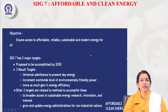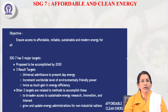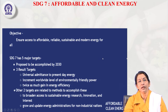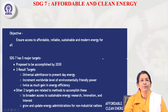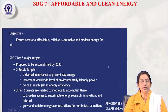Under SDG 7 there are also 5 major targets to be achieved by 2030, including universal access to present-day energy, doubling the worldwide level of environmentally friendly power, gains in energy efficiency, broadening access to sustainable energy research and innovation, and growing and updating energy administration for non-industrial nations.